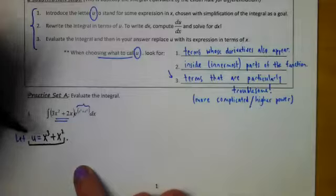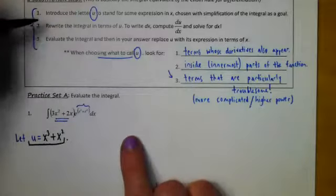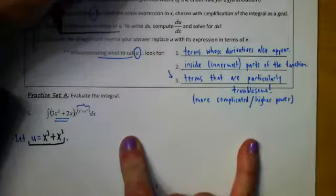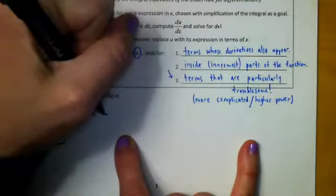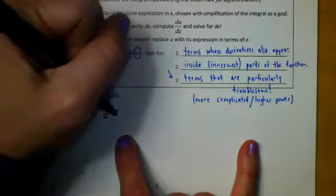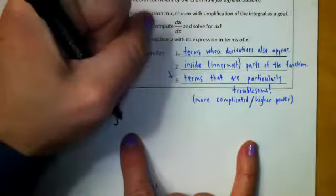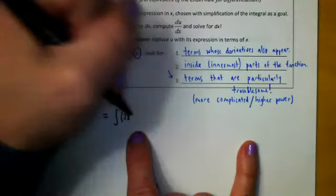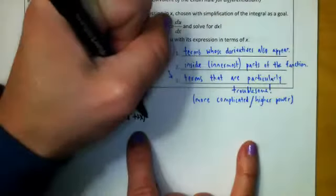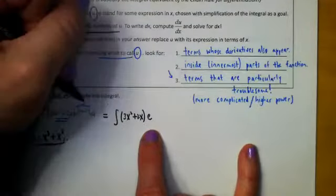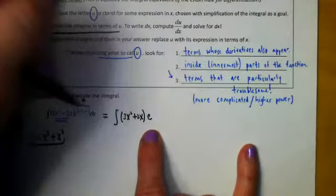Step two says can you rewrite the integral in terms of u? We're going to do that first. So we're going to go up to the integral, the original function. It's the integral of, well, we don't have anything to plug in for this yet, so we're going to just leave it. 3x squared plus 2x. We're going to leave the e, but instead of saying e to all this stuff, we call that u. So we're going to say e to the u instead of that complicated expression. So we've already gotten a little bit simpler. And then afterwards, we have dx.